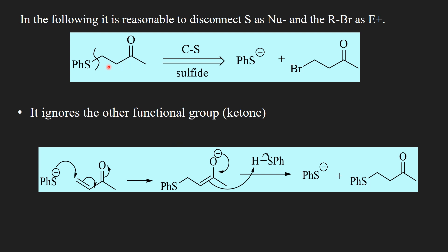In this disconnection, it is reasonable to disconnect sulfur as a nucleophile and alkyl bromide as an electrophile. There is nothing wrong with this suggestion except that it ignores the other functional group, the ketone in the target molecule, and so misses an opportunity for a two-group disconnection. Reverting to a synthon for a moment, the sulfur synthon is the same in both disconnections as a reagent, but the carbon synthon might make us think of a different reagent. In two-group disconnection, the carbon synthon is different.